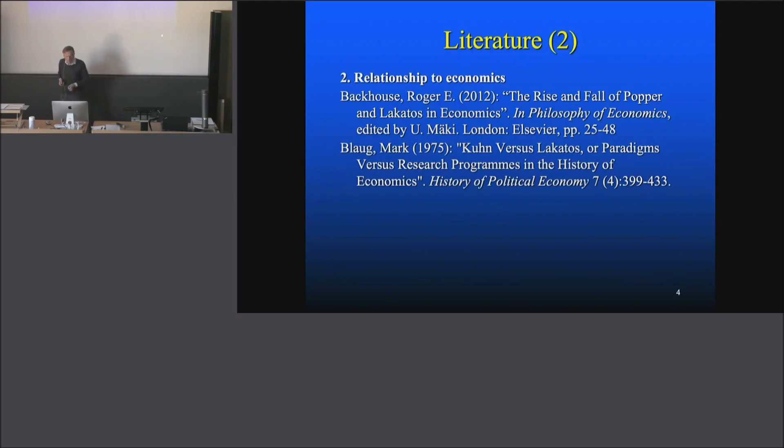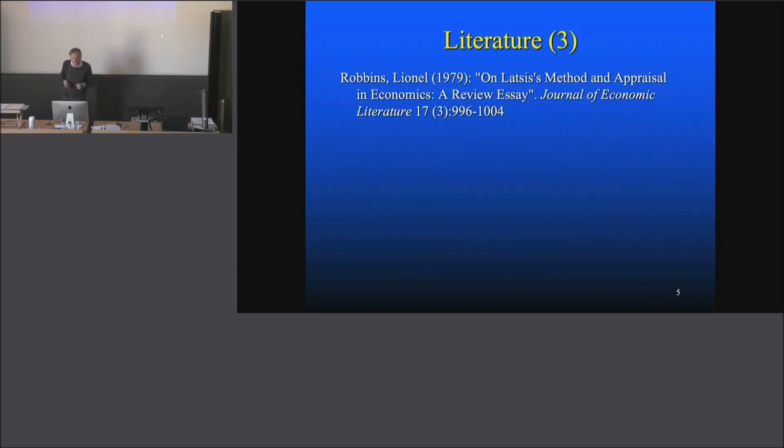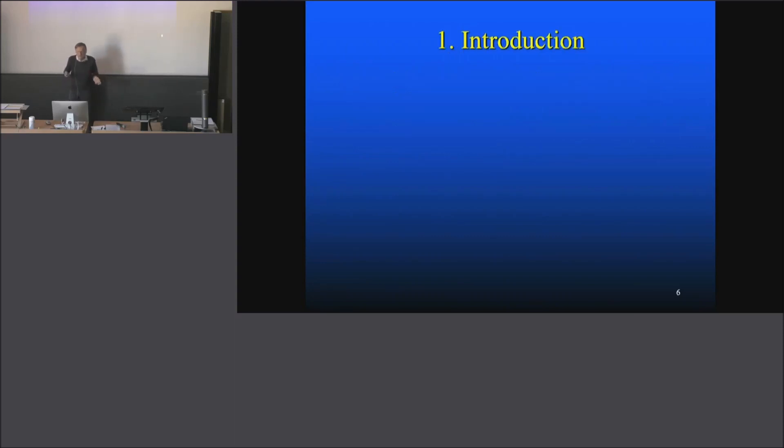They pop up from time to time but not in important positions. Then Blaug has an older paper, Kuhn versus Lakatos: Paradigm versus Research Program in the History of Economics. A book by Latsis, who was a pupil of Lakatos: Method and Appraisal in Economics. Then this is a short book that's quite good if you want to see something about the connection between general philosophy of science and economics. Methodology and Economics: A Critical Introduction, already 30 years old. Then Robbins on Latsis' Method and Appraisal in Economics, also a well-known paper, and then What's Wrong with Economics, 50 years old. I don't know whether there's still something wrong with economics according to Ward.